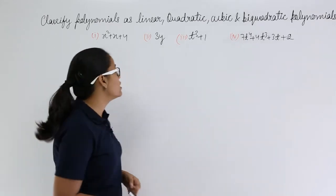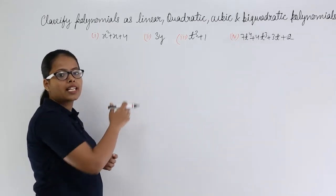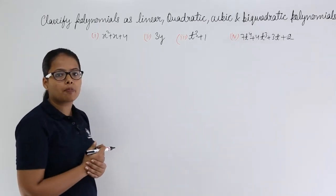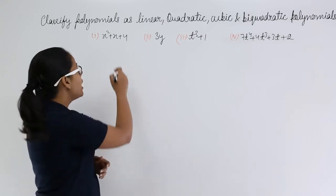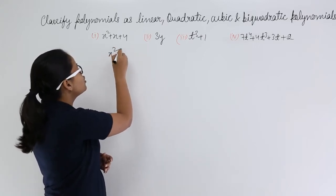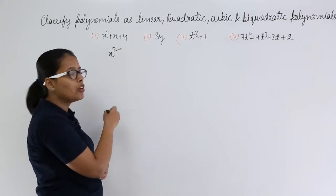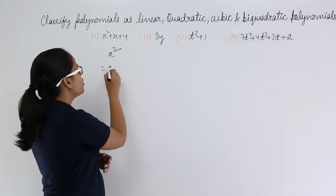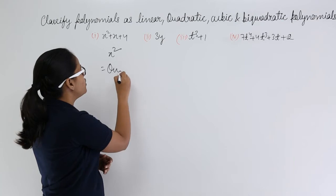Now let's take our first problem: x squared plus x plus 4. The highest power in x is 2 here, so this is a quadratic equation.